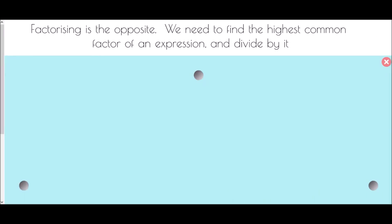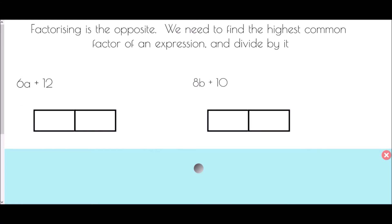Factorizing is the opposite: we find the highest common factor of an expression and divide by it, putting the brackets back in. Using the same grid layout - like a bus stop for division - we place 6a in one box and +12 in the other. We look for a number that divides into both pieces.